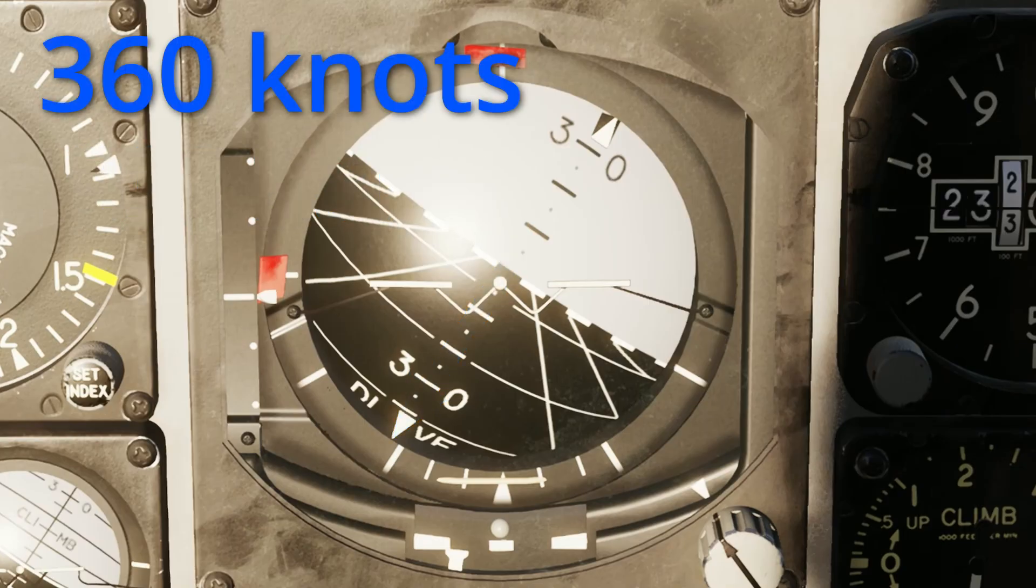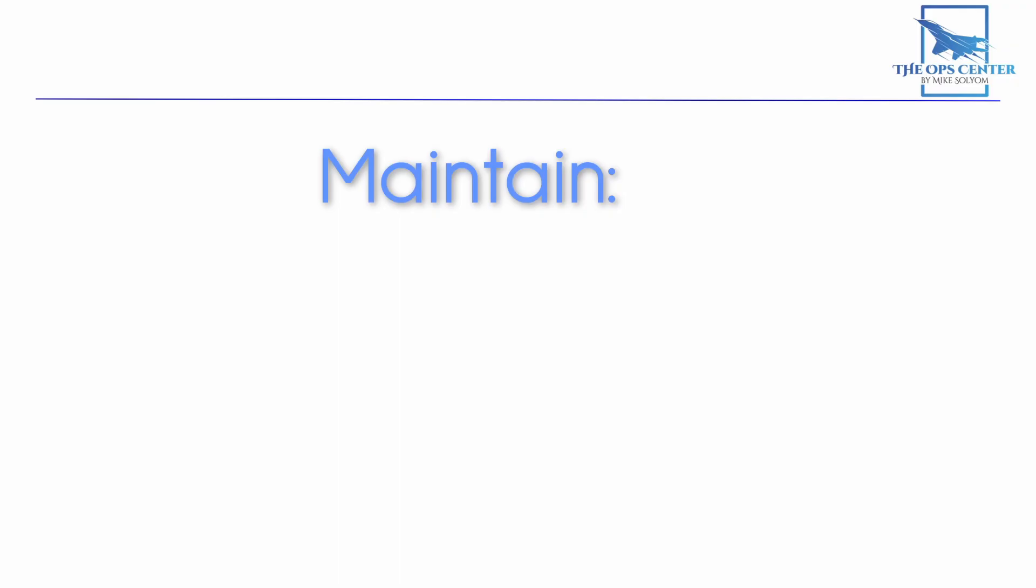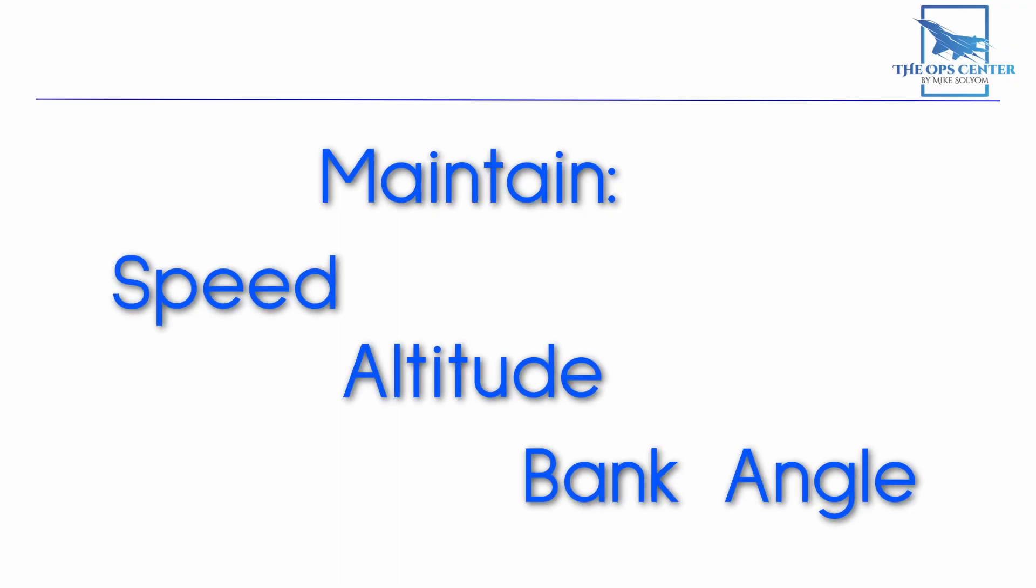And if we were doing 360 knots, we would want 45 degrees of bank, which is exactly halfway between the 30 and 60 marks. Now all you have to do is maintain speed, altitude, and bank angle, and your turns will be consistent and repeatable. Let's go over how you can do this.